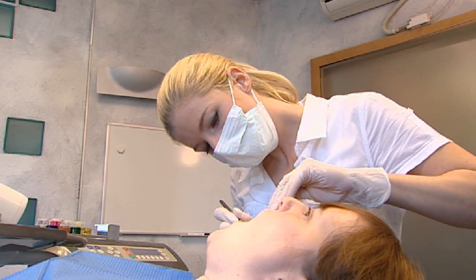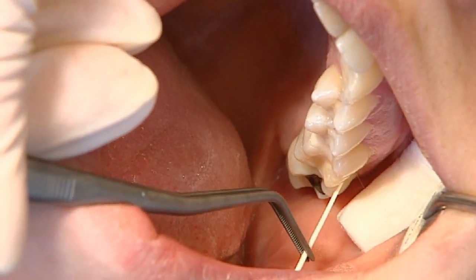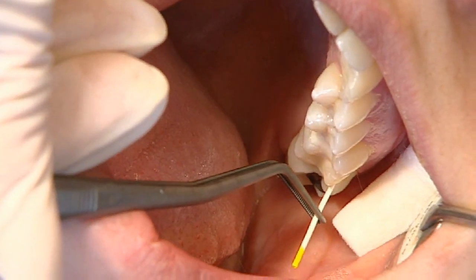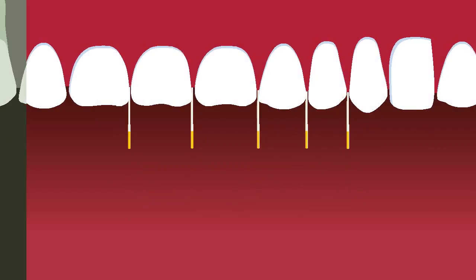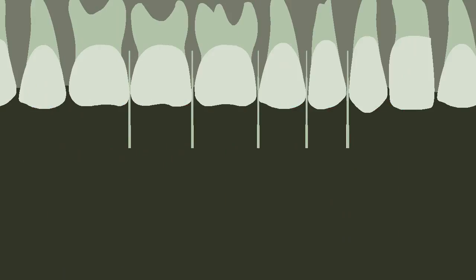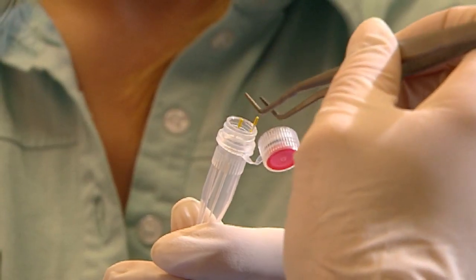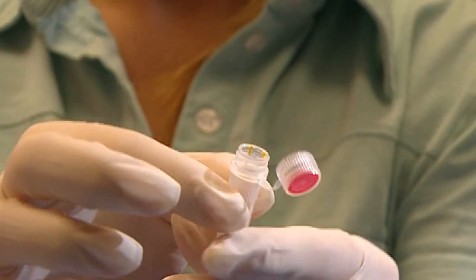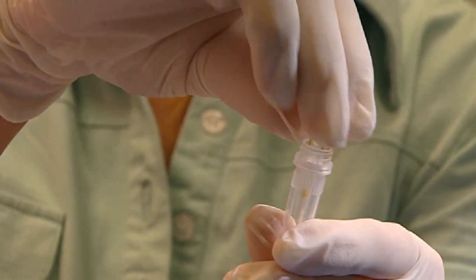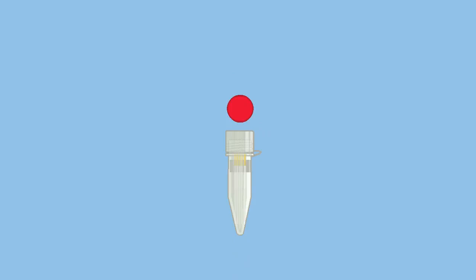If you wish to determine the presence of PA bacteria in the entire periodontium, independent of the location of the bacteria, a pool specimen is recommended. In this case, specimens are taken from the deepest gingival pockets of each quadrant. Up to five paper points can be combined together in the transport tube with the red end cap.